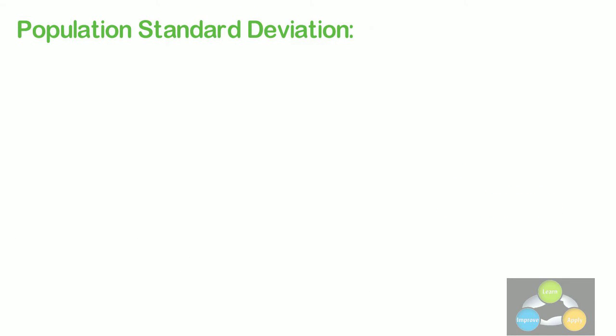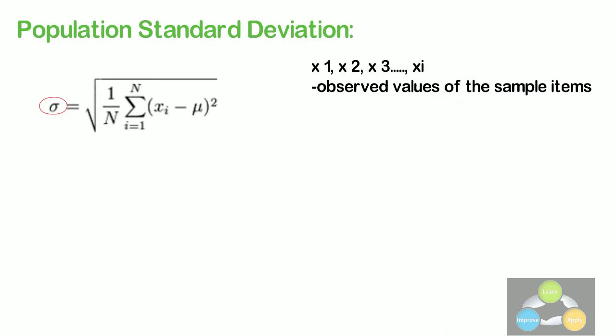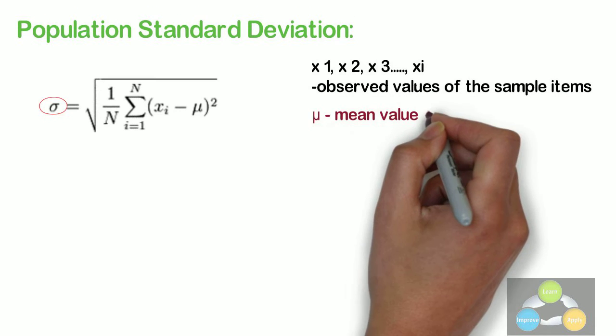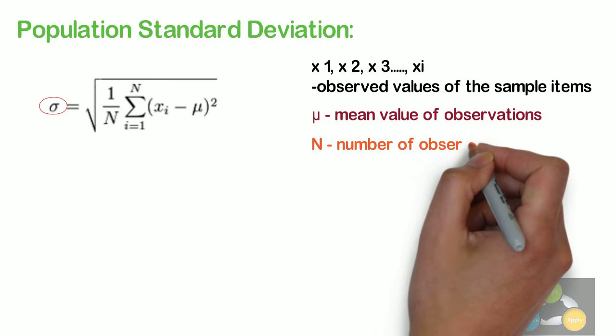The population standard deviation is calculated by using the following formula. It is denoted by sigma, which is equal to square root of 1 upon N, summation goes from i equals 1 to N, xi minus mu bracket square. In this equation, x1, x2, x3 up to xi are the observed values of the sample items. Mu is the mean value of these observations and N is the number of observations in a sample.